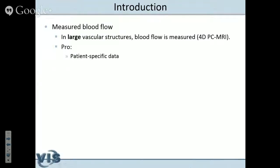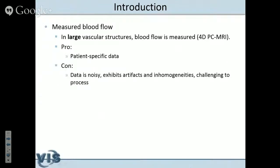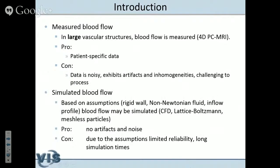Flow may be measured with a variant of magnetic resonance imaging called 4D PC-MRI, phase contrast imaging — that is really patient-specific data. However, the data is rather noisy, the image acquisition takes a lot of time, and therefore there are artifacts such as motion artifacts and inhomogeneities typical for any kind of MRI. So it is challenging to process this data; you must suppress some artifacts and compensate for them. Simulated flow, on the other hand, is clean and has no artifacts or noise, but is based on a number of assumptions.